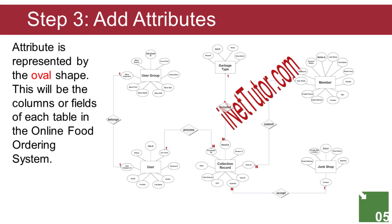User Group entity attributes: user_group_ID, group name, description, allow add, allow edit, allow delete, allow print, allow import, allow export. Member entity attributes: member_ID (primary key), last name, first name, middle name, gender, age, contact, email, address, profile picture, username, password, account status.